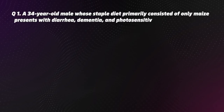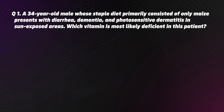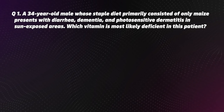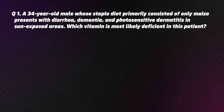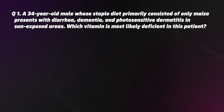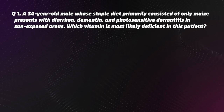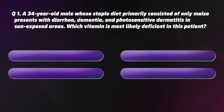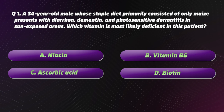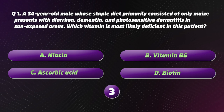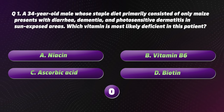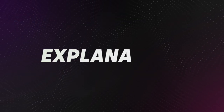Question 1. A 34-year-old male whose staple diet primarily consisted of only maize presents with diarrhea, dementia, and photosensitive dermatitis in sun-exposed areas. Which vitamin is most likely deficient in this patient? Options: A. Niacin, B. Vitamin B6, C. Ascorbic acid, D. Biotin. The correct option is A, Niacin.